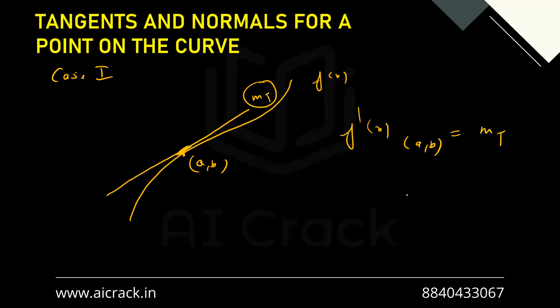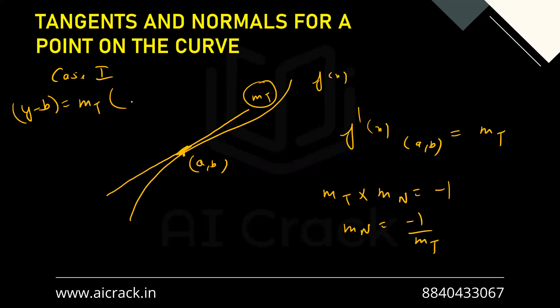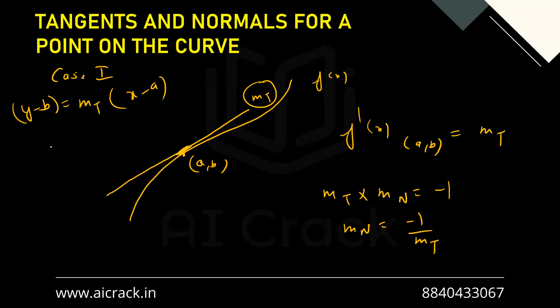Since m_t × m_n = -1, m_n equals minus one over m_t. The equation of the tangent is y - b = m_t × (x - a), and the equation of the normal is y - b = m_n × (x - a). We find slopes using derivatives and then write down the equations.